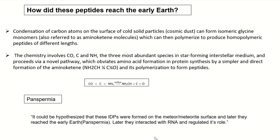These IDPs reached the surface of the earth, interacted with RNA, and led to the stability of RNA. Gradually this RNA evolved into other biological molecules or biological entities.